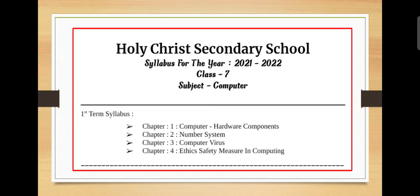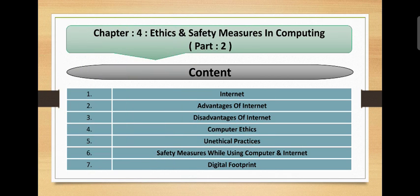This is the syllabus of the first term examination. I have already completed chapter number 1, Computer Hardware Components, and chapter number 3, Computer Virus. Today I am going to complete chapter number 4, Ethics and Safety Measure in Computing. In my previous video I already discussed some unethical practices, and today I am going to continue with a few more unethical practices, then Safety Measures while using the Computer and Internet, and Digital Footprints.